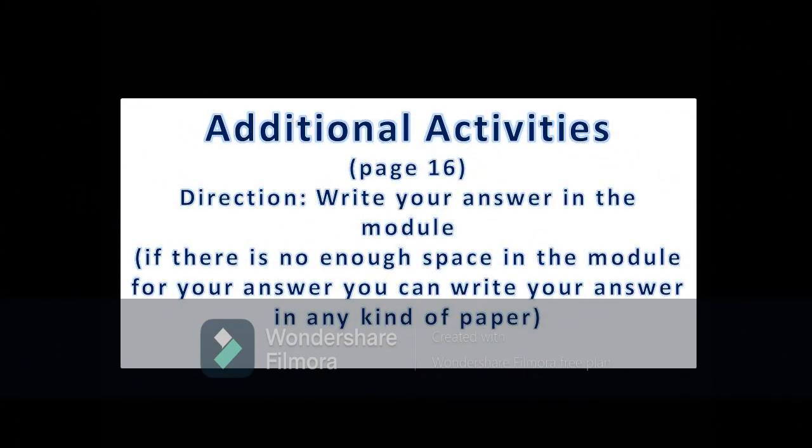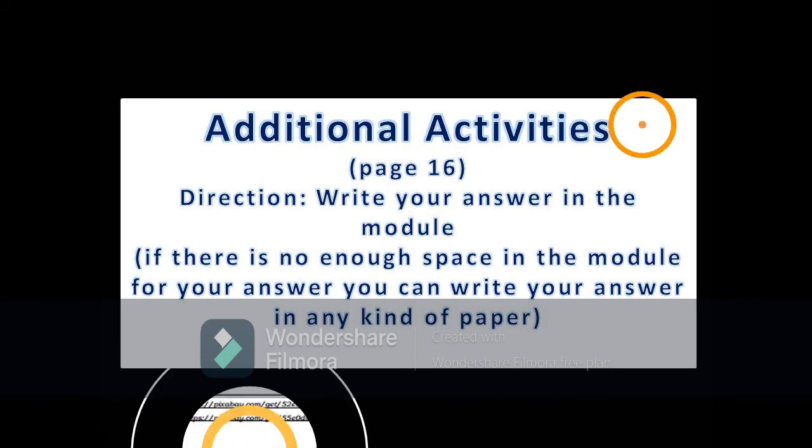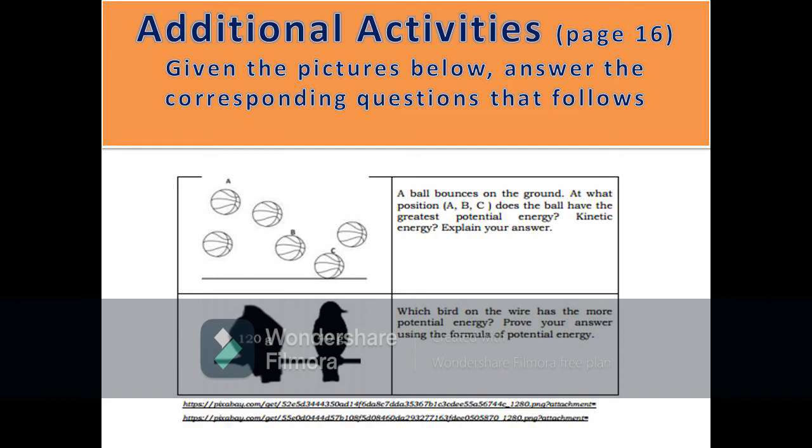Additional activities, page 16. In this portion, another activity will be given to you to enrich your knowledge or skills of the lesson learned. This also tends retention of the learned concepts. In additional activities, page 16, activity 5, more about potential energy and kinetic energy. Given the pictures below, answer the corresponding questions that follows. As you can see, there are two pictures and two situations you need to analyze. You write your answer in the space in the module. And there is a rubric for scoring. You will be having two points if the discussion is complete with no misconception, one point, discussion is incomplete with minor misconception, and no points with no discussion. You need to do classes to analyze and answer the given questions.